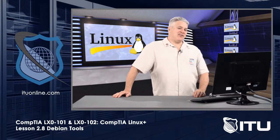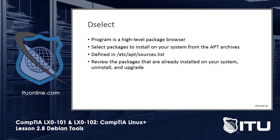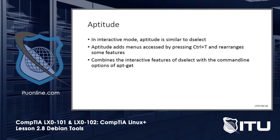Debian has another tool besides apt called Deselect. It can select packages to install on your system from the apt archives. It still depends on /etc/apt/sources.list, so that has to be configured correctly. It does a lot of the other things that apt-get does, though I kind of like apt-get a little bit better myself.